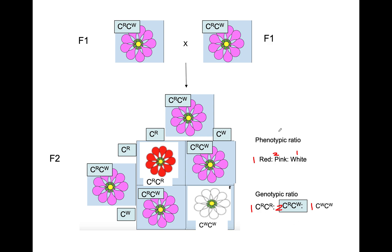When you see a situation like that, keep an eye on it. When you do not get a 3:1 ratio but instead get a 1:2:1 ratio in F2, that's a sign that you're dealing with an exception to Mendelian genetics.